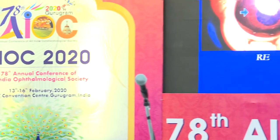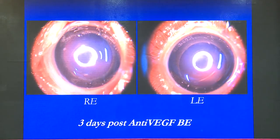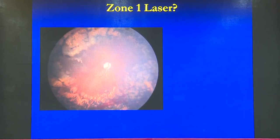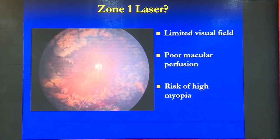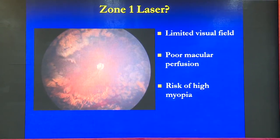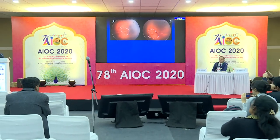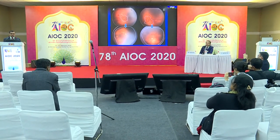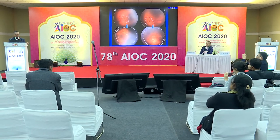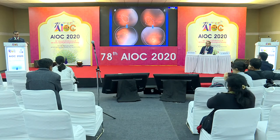There are situations where laser might not work. If the pupil is not dilating, there's no need to struggle — you can give an injection first. Once you do that, the pupils dilate well and then you can do laser if desired. A Zone 1 laser has its own limitations: limited visual field, poor macular perfusion, and high risk of myopia. In 2020, with anti-VEGFs available, if there is only a small amount of retina available in ROP, it's better not to laser — inject anti-VEGF, let the retina grow, and then laser after 6–8 weeks or at recurrence.